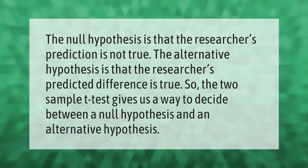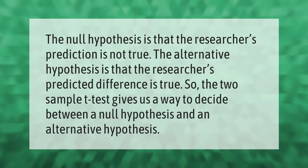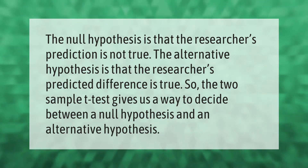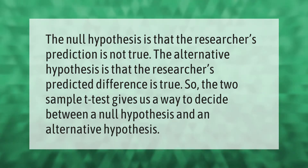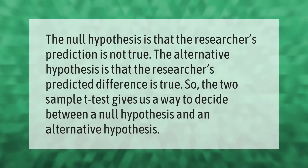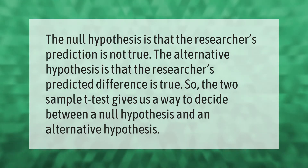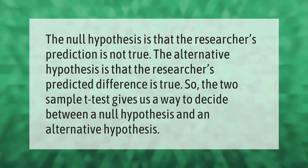The null hypothesis is that the researcher's prediction is not true. The alternative hypothesis is that the researcher's predicted difference is true. The two-sample t-test gives us a way to decide between a null hypothesis and an alternative hypothesis.